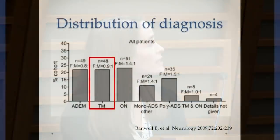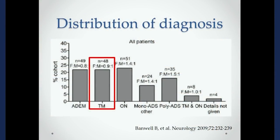It is also seasonal, seeming to be more common between November and April in the cooler months of the year. This information from a pediatric study done in Canada at Sick Kids looked at the first demyelinating event in children. You can see that transverse myelitis was as common as ADEM and optic neuritis — these were the most common among all first-time demyelinating conditions seen.